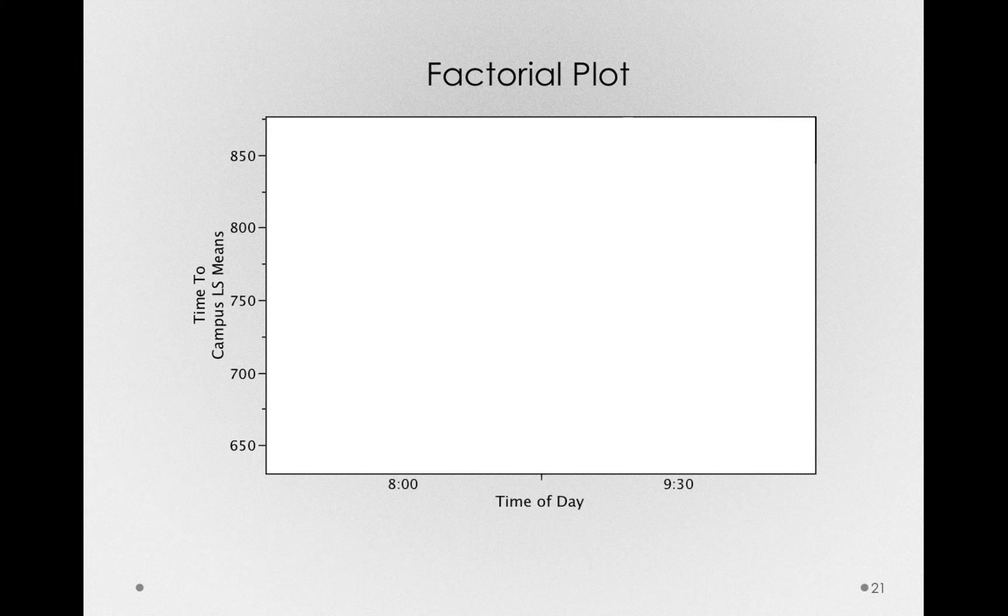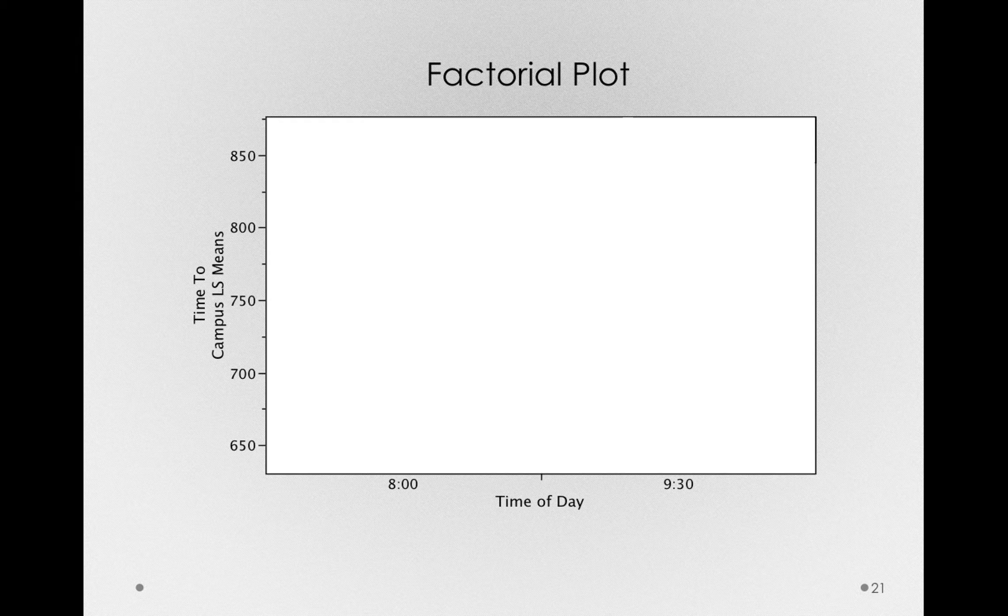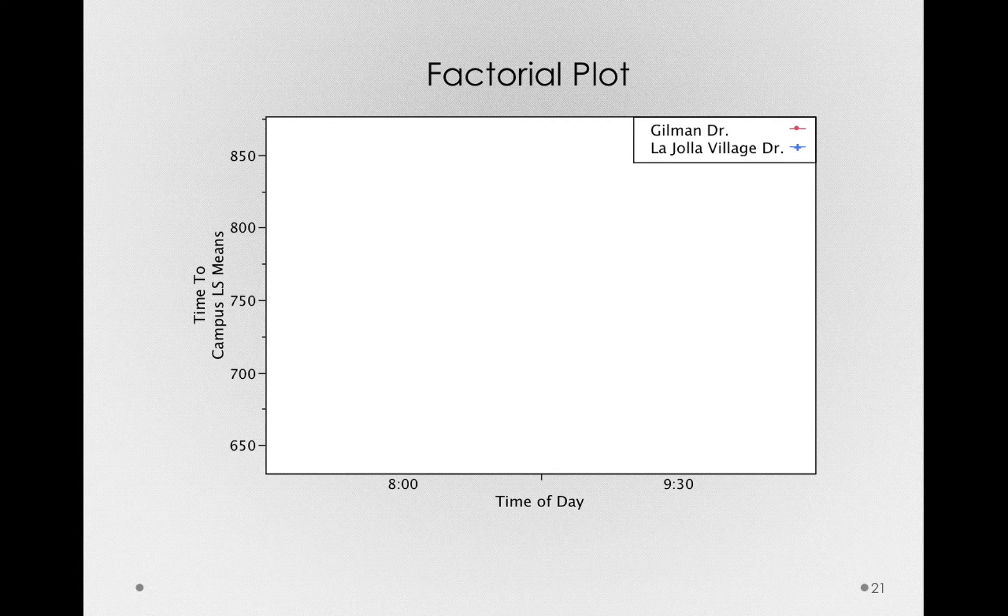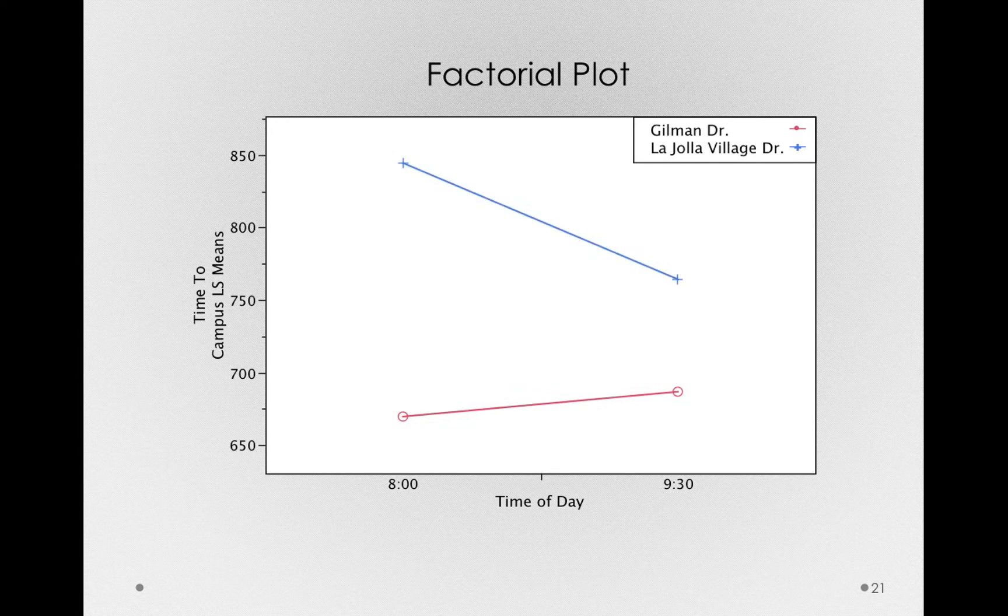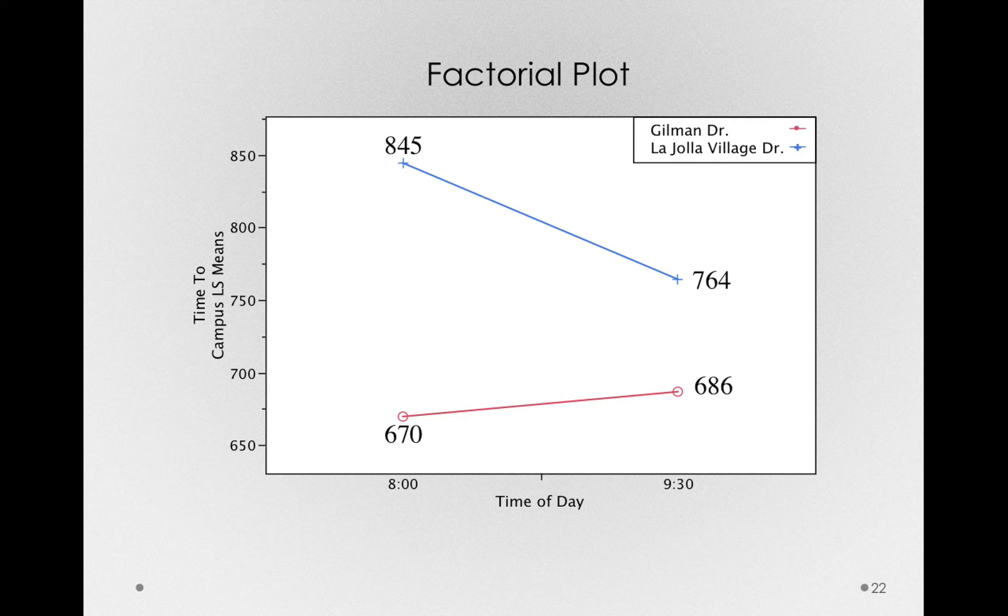To start, I'll put an x-axis. In this case, I'll use the time factor as the x-axis, and as separate lines, I'll use the different routes. So let me draw in the lines here, and I'll even add back in the means for each of the different combinations.